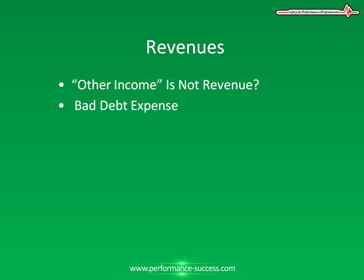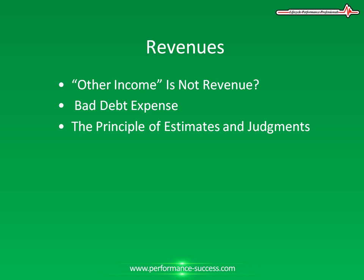Bad debt expense: when companies sell their products, some customers may ultimately not pay. Companies are therefore required to estimate this uncollectible amount, referred to as bad debt expense, at the time of sale. Net revenues include the financial impact of returned goods and uncollectible payment, or bad debt, from customers. Net revenues equal gross revenues minus bad debt expense. Bad debt expense is one such account that must be estimated, as certain measurements cannot be performed completely accurately and so must utilize conservative estimates and judgments.